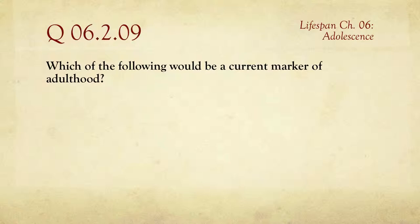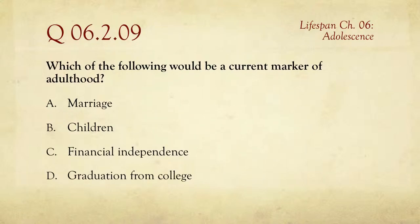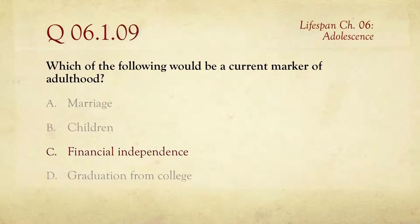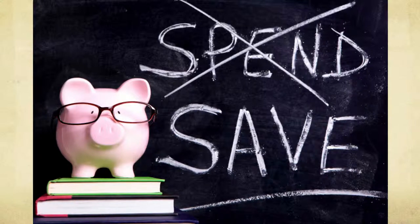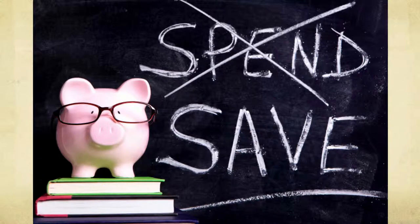Question nine: which of the following would be a current marker of adulthood? The choices are marriage, children, financial independence, or graduation from college. The answer is financial independence — not marriage, children, or graduation. Many people get married or even have kids while in college, or graduate but still don't feel like they're transitioning to adulthood if they're still being supported by others. Financial independence requires overcoming the desire to spend and developing the ability to save, which is hard. It is seen as a major marker of the transition into adulthood.